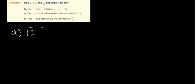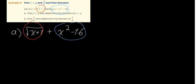Let f of x equal the square root of x plus 1 and g of x equal x squared minus 16. Part A: find f plus g. That's just the square root of x plus 1 plus x squared minus 16. Now for the domain, we need the intersection of the two individual domains.